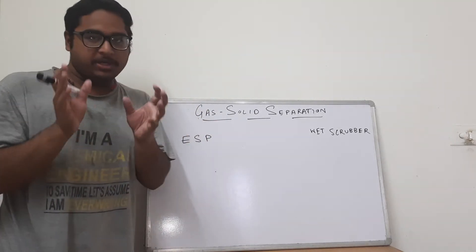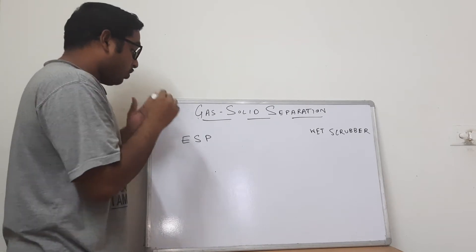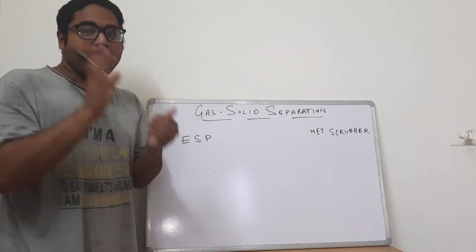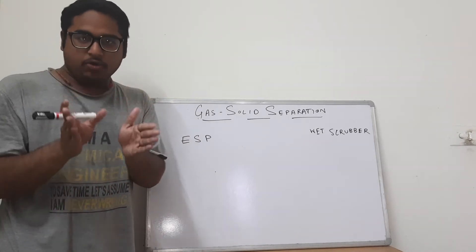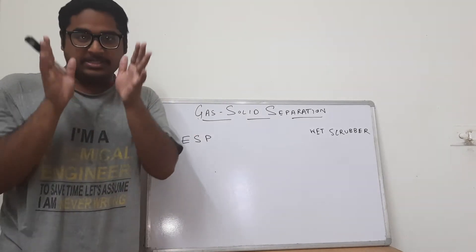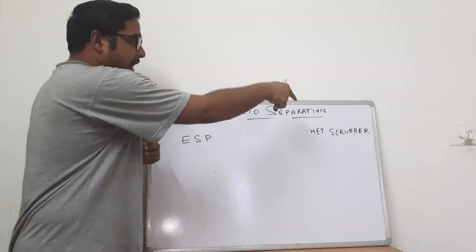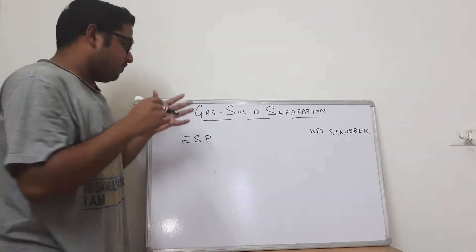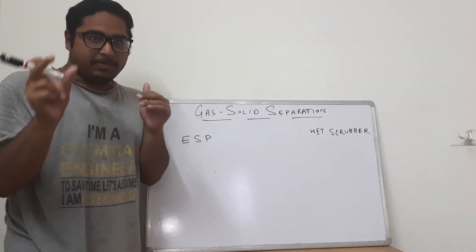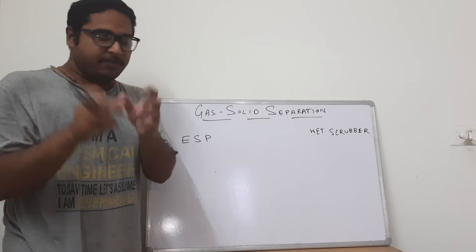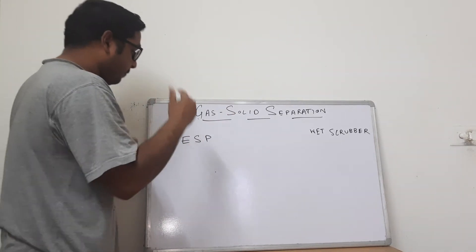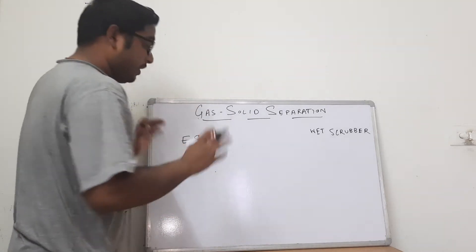There are four basic methods of gas-solid separation in an industry. Out of those, we have already discussed two — namely cyclone separators and bag filters. We are going to discuss electrostatic precipitators (ESPs) and the wet scrubbing system, which are very popular in the industry. You can refer to that earlier video for the first two methods; the remaining two are discussed in today's video. So let's go straight to the topic: the working principle of ESP.